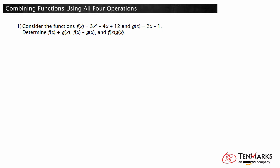First, let's determine f of x plus g of x. Substituting the given expressions for f of x and g of x results in 3x squared minus 4x plus 12 plus 2x minus 1. Now we need to combine like terms. 3x squared cannot be combined with any other term.